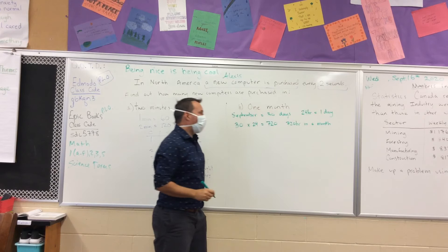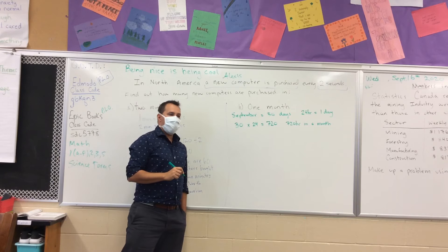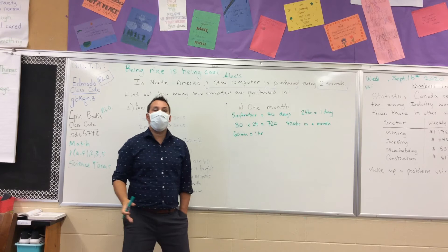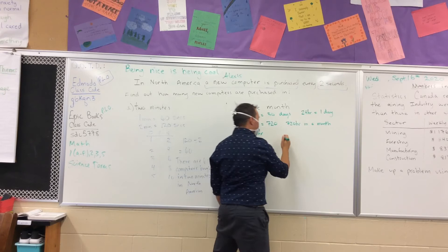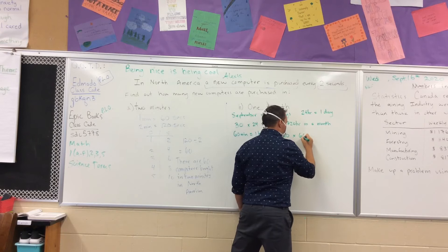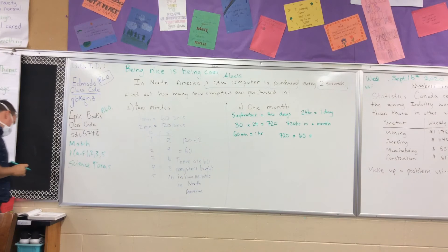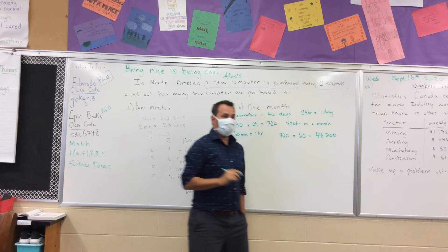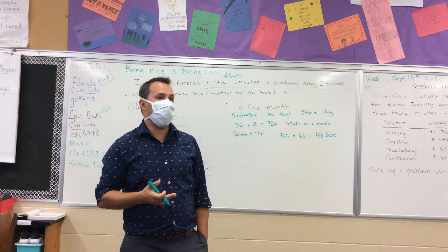How many minutes are in an hour? 60 minutes equals one hour. We know there are 720 hours in the month. How many minutes are in the month? We take 720 hours and multiply by 60 minutes per hour. That equals 43,200. There are 43,200 minutes in a month.